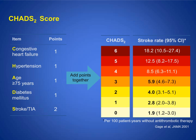In 2001, a method was developed to calculate a patient's risk of stroke annually called the CHADS-2 score — a point system where C stands for congestive heart failure, H for hypertension, A for age greater than 75, D for diabetes, and S for prior stroke, which gives two points. Depending on the CHADS-2 score, this predicts annual stroke risk. The higher the CHADS-2 score, the higher the risk of stroke.